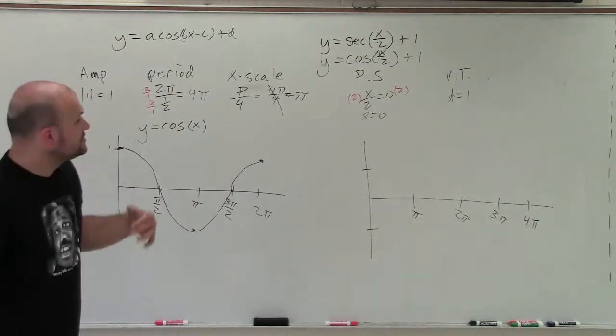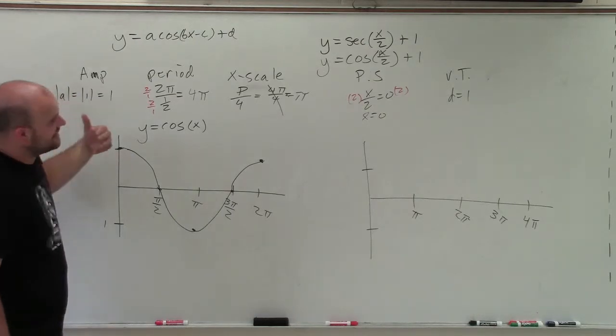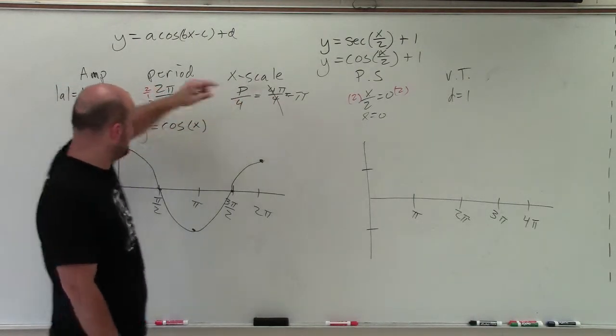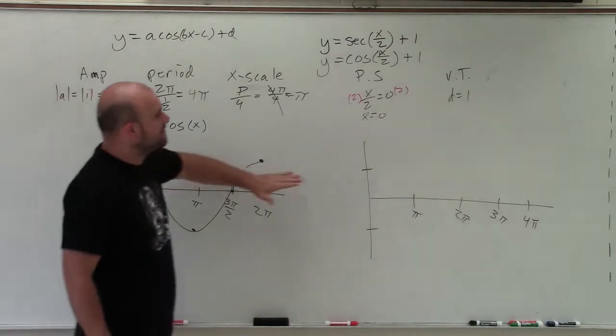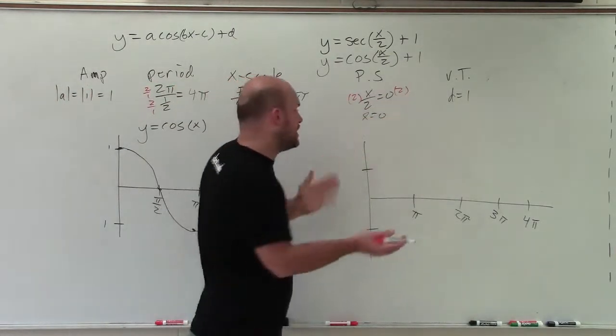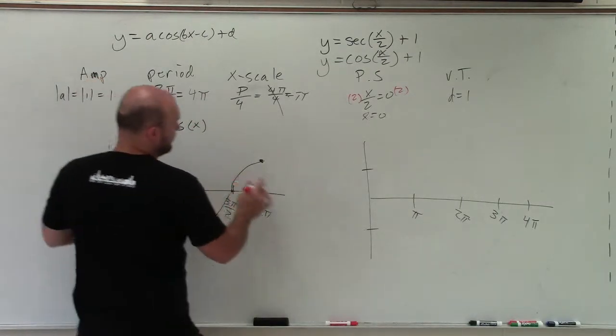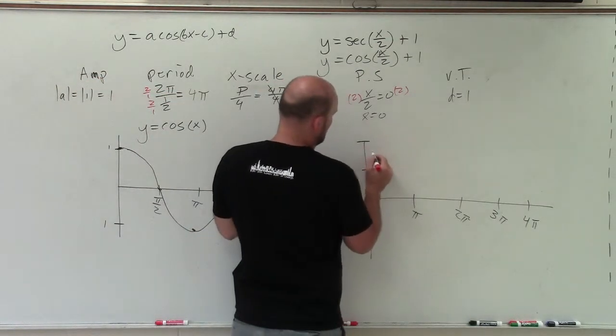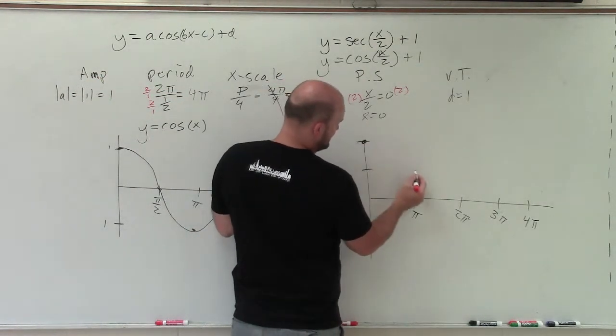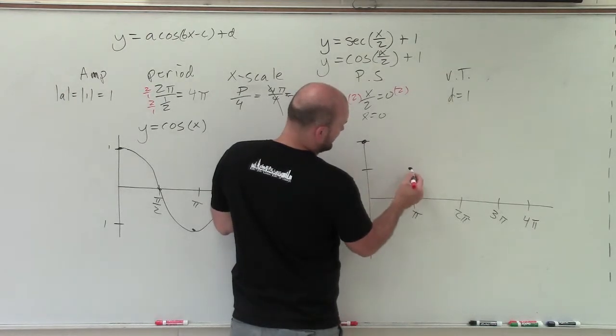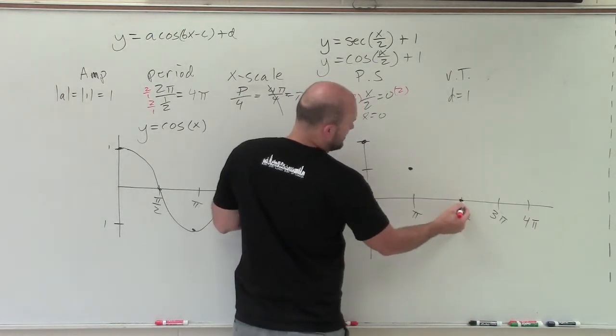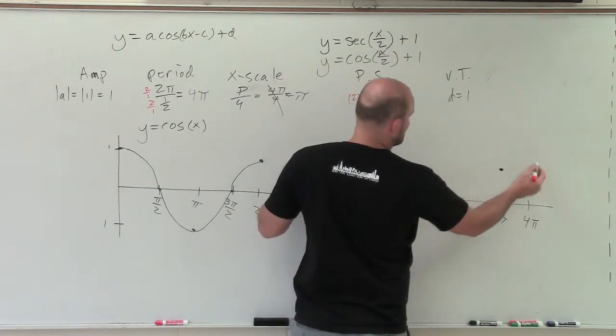OK? So the last thing is, now I don't have a phase shift. So therefore, my graph is still going to start at 0. However, now I have a vertical transformation up 1. So the whole graph is going to be shifted up 1. So therefore, I'm going to go up 1 unit. So that's going to be my maximum. Where previously, it would be an intersection is now going to be there, to my minimum, to an intersection, to a maximum.